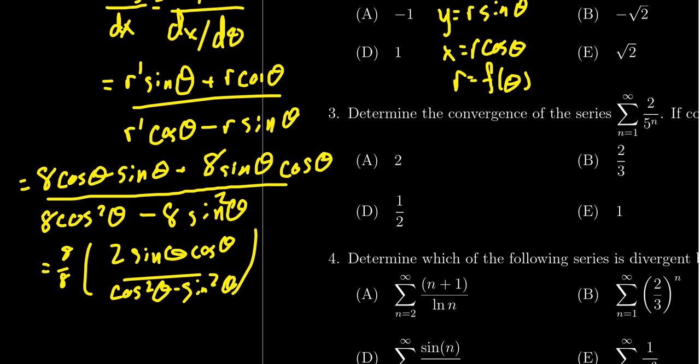Which at this point, you could plug in the pi thirds if you so wanted to. It's perfectly fine. Or you could rewrite this as just sine of 2 theta over cosine of 2 theta. If you want to use those identities. Whichever you prefer.